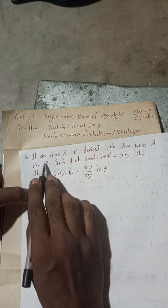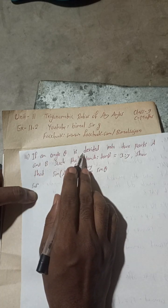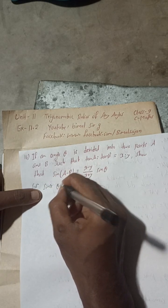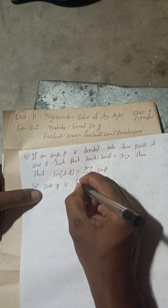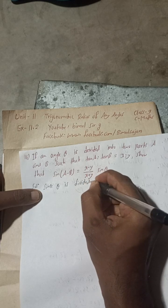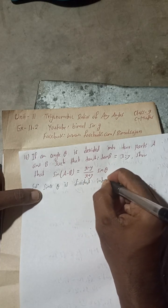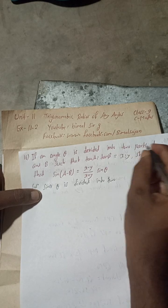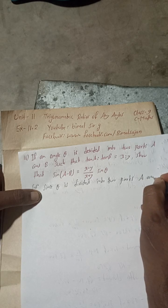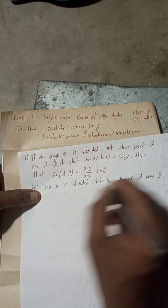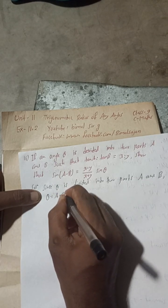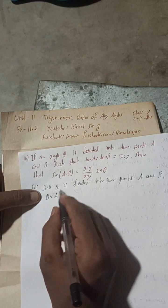Here, since theta is divided into two parts A and B, this means what? This is theta equals A plus B or A plus B equals theta. Two parts mean if we add this then we will get theta.